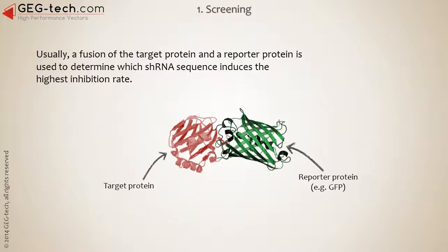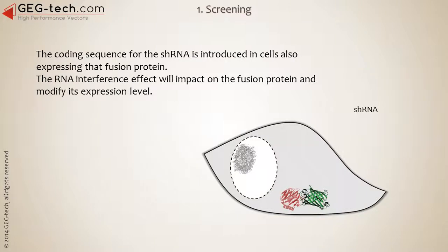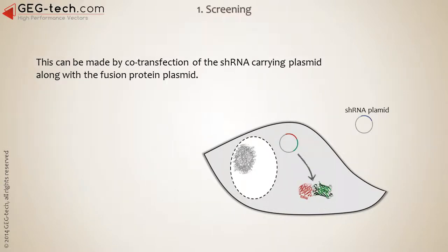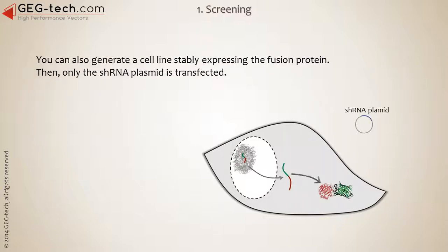Usually, a fusion of the target protein and a reporter protein is used to determine which shRNA sequence introduces the highest inhibition rate. The coding sequence for the shRNA is introduced in cells also expressing that fusion protein. The RNA interference effect will impact the fusion protein and modify its expression level. This can be done by co-transfection of the shRNA-carrying plasmid along with the fusion protein plasmid, or you can generate a cell line stably expressing this fusion protein, and then only the shRNA plasmid is transfected.